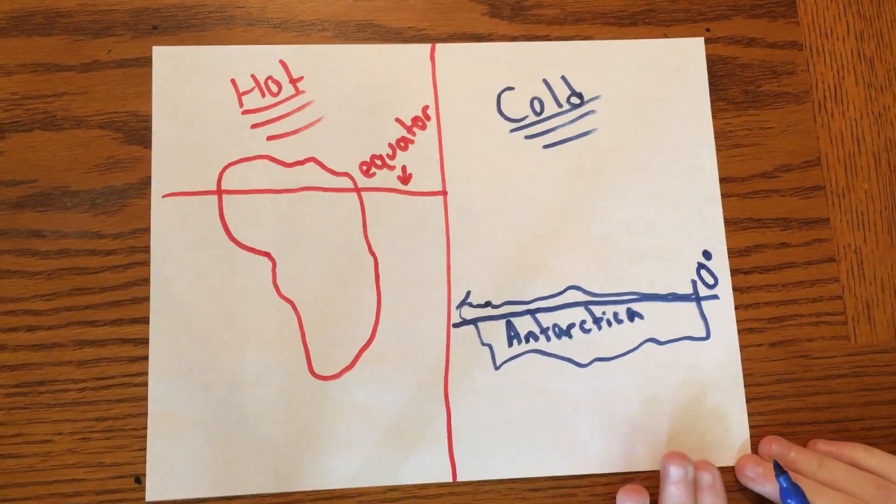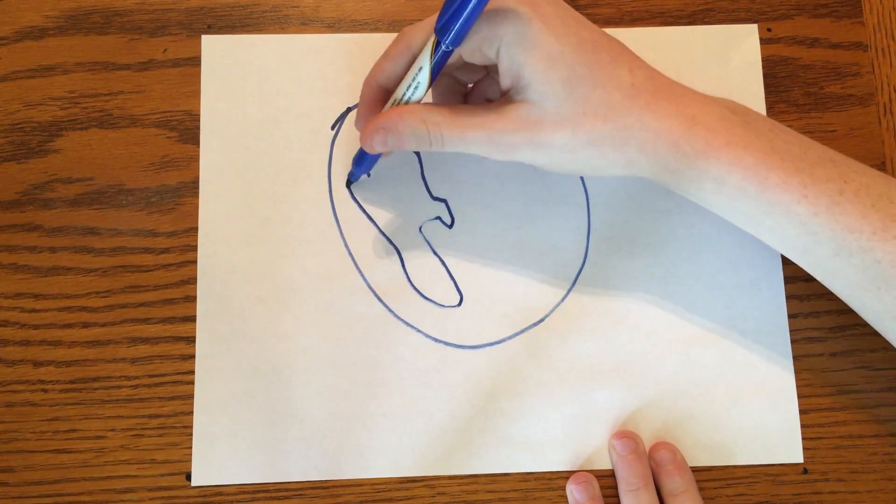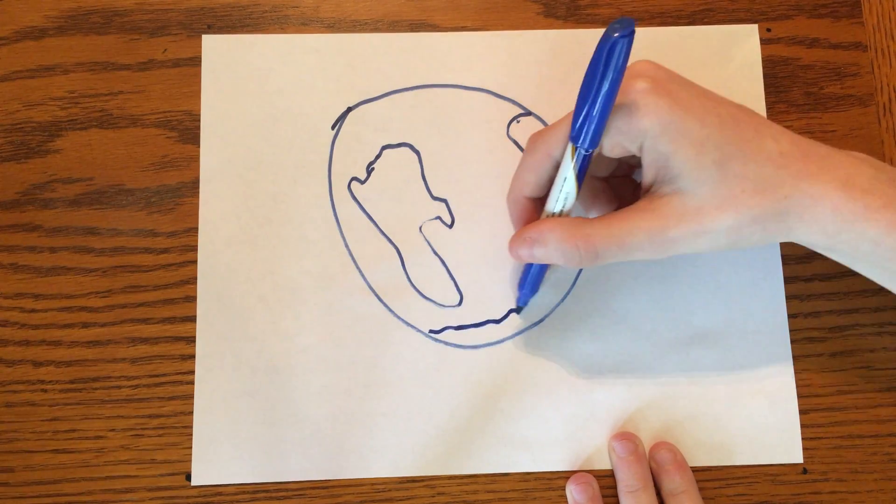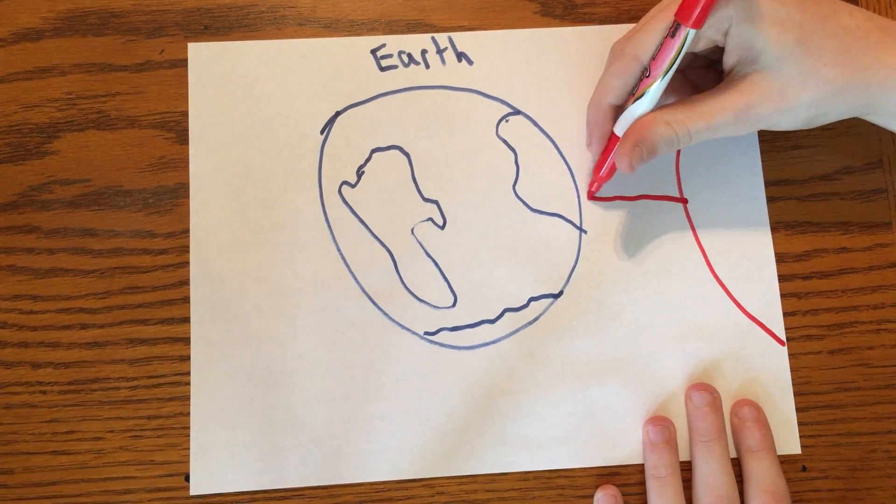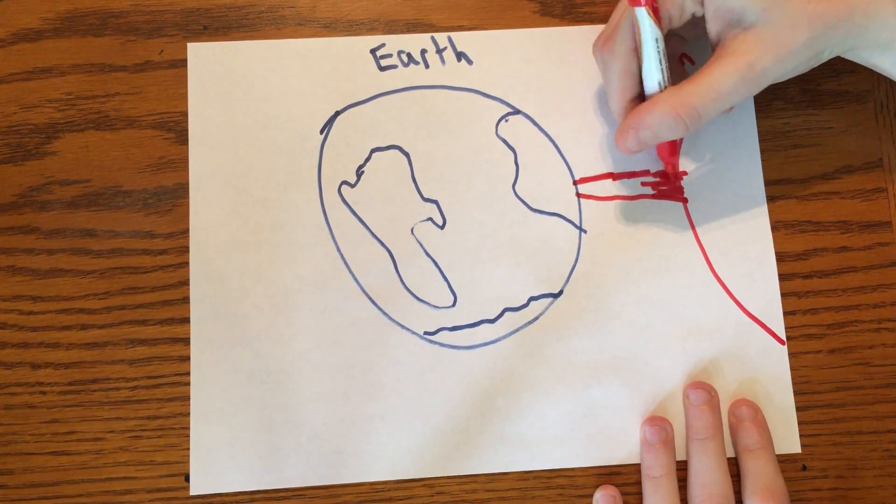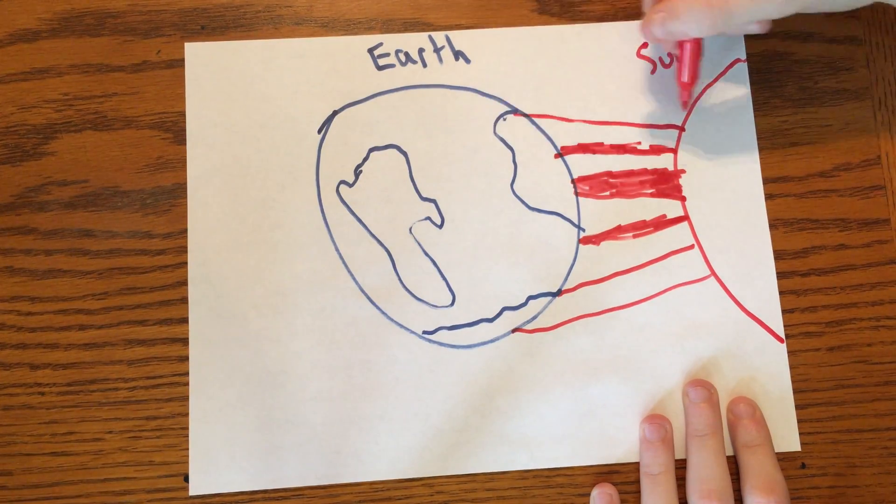In areas closer to the poles with higher latitudes, the sunlight has a larger area of atmosphere to pass through, which will make the sunlight less intense than places with lower latitudes.